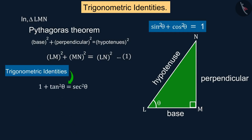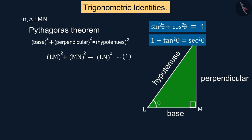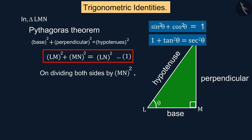This identity holds where the value of θ is greater than or equal to 0 degrees and less than or equal to 90 degrees. Similarly, if the equation of the right triangle is divided by the square of MN.